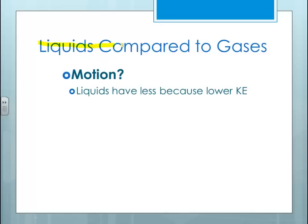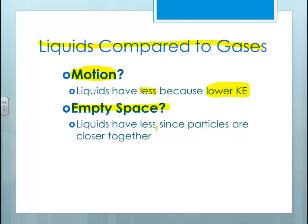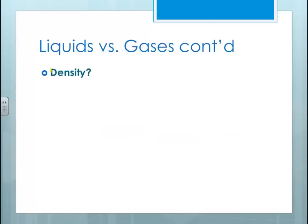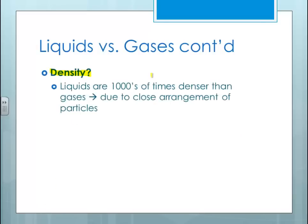If we compare liquids to gases in terms of motion of particles, liquids will have less because they have lower kinetic energy. So less kinetic energy means the forces hold them together and they can still be attracted to one another. Liquids will have much less empty space since the particles are that much closer together. Gases have extremely low density; liquids are about a thousand times denser than gases, due to the close arrangement of the particles, since density is mass over unit volume.